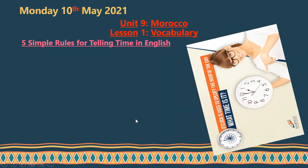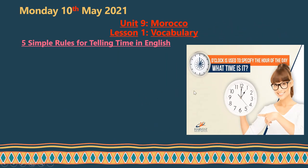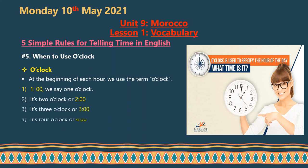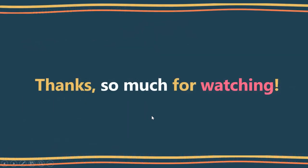Rule number five: we use 'o'clock' at the beginning of each hour — when the minutes are exactly zero. For example: 1:00 is 'one o'clock,' 2:00 is 'two o'clock,' 3:00 is 'three o'clock,' 4:00 is 'four o'clock,' 5:00 is 'five o'clock,' 6:00 is 'six o'clock.' That covers all five rules. Thank you so much for watching — if you have any questions, please drop a comment. Bye bye, see you next video!